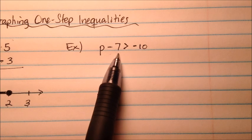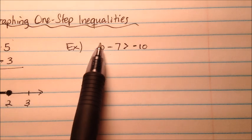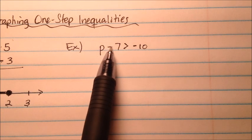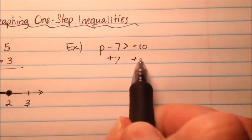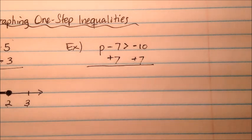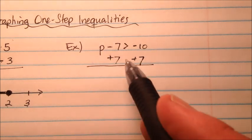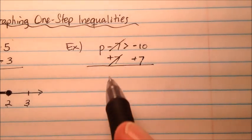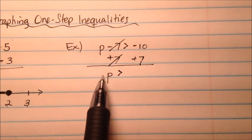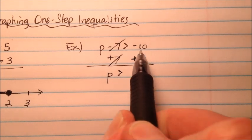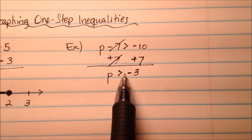In this example, we have p minus 7 is greater than negative 10. Like the last example, we need to isolate the variable. The opposite of minus 7 is plus 7, so we add 7 to both sides — that's the addition property of equality, which states that if you add a number to one side, you add to the other and everything stays balanced. The 7s cancel, leaving just p, and negative 10 plus 7 gives us negative 3. So our solution is p is greater than negative 3.